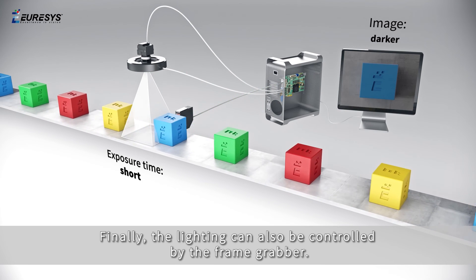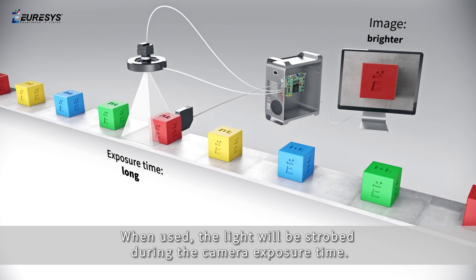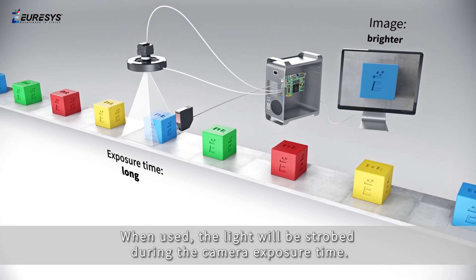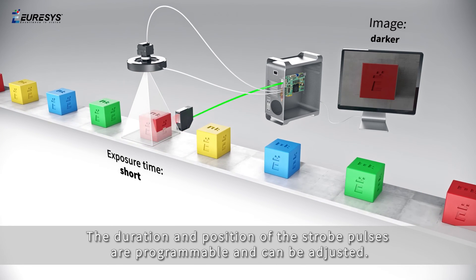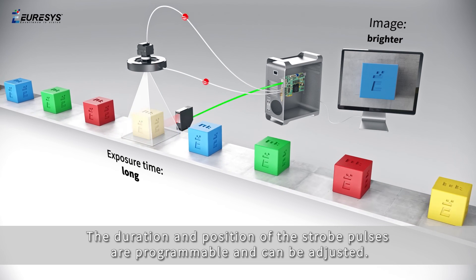Finally, the lighting can also be controlled by the frame grabber. When used, the light will be strobed during the camera exposure time. The duration and position of the strobe pulses are programmable and can be adjusted.